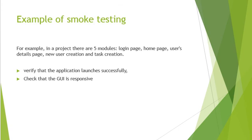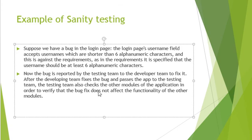Now let's look at an example of sanity testing, using the same web page example. If there is a bug in the login page, the tester reports it, the developer fixes it and releases a new build. The tester will then test whether that particular bug has been fixed, and also check the other modules to ensure the new code has not affected them. These are examples of sanity testing.